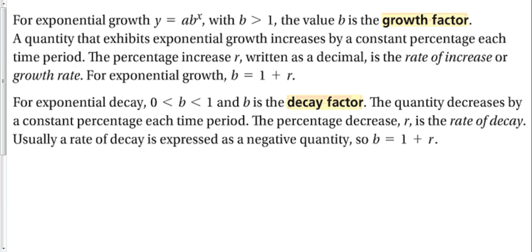This leads us to growth factors and decay factors. For exponential growth, when y equals ab^x, when b is bigger than one, the value of b is the growth factor. A quantity that exhibits exponential growth increases by a constant percentage each time period. The percentage increase r, written as a decimal, is the rate of increase or the growth rate. When we want to find this, for exponential growth, we take the percent, add it to one, and that's our growth factor.